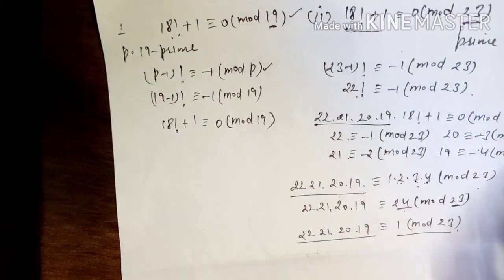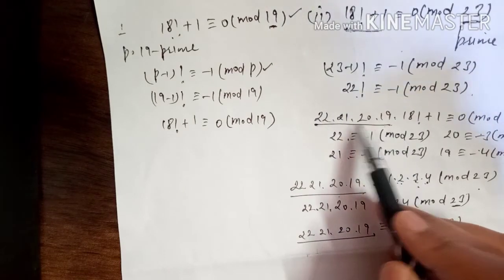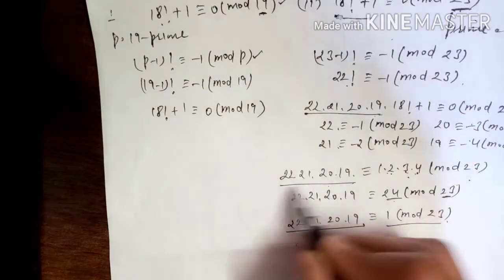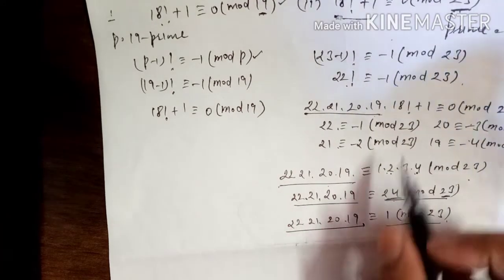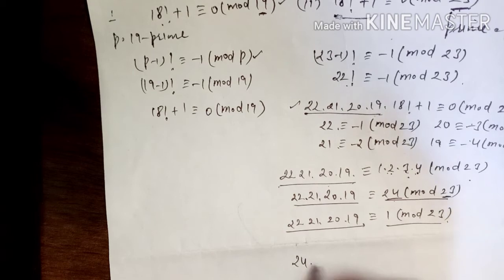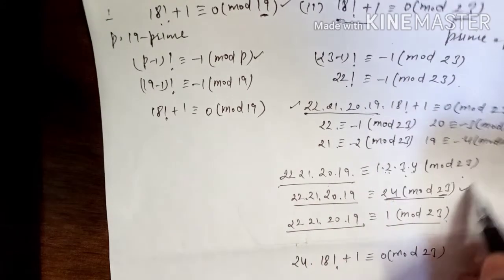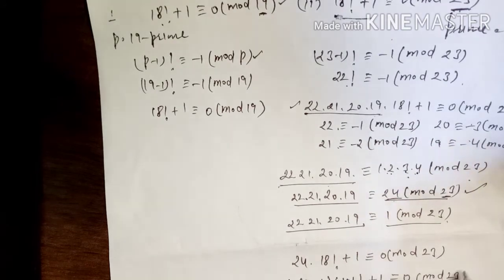We substitute this value back. Since 22 × 21 × 20 × 19 ≡ 1 (mod 23), and 22! = 22 × 21 × 20 × 19 × 18!, we had 22! ≡ -1 (mod 23). Substituting, we get 24 × 18! + 1 ≡ 0 (mod 23). We can write 24 as 23 + 1, so 18! + 1 ≡ 0 (mod 23).